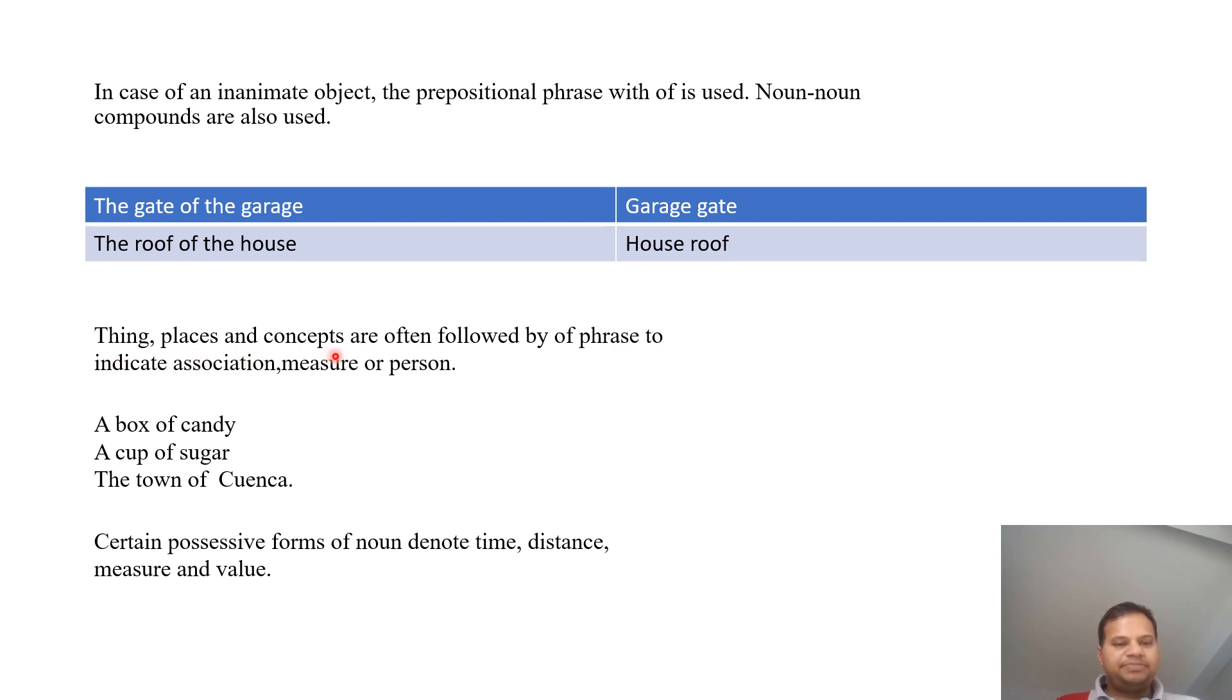Things, places, and concepts are often followed by of phrase to indicate association, measure, or person. For example, a box of candy, a cup of sugar, the town of Cuenca.